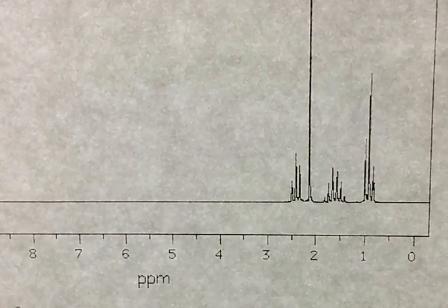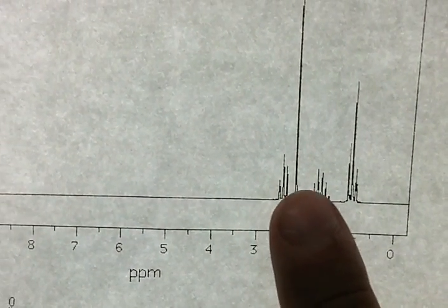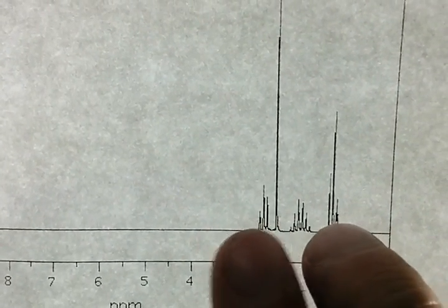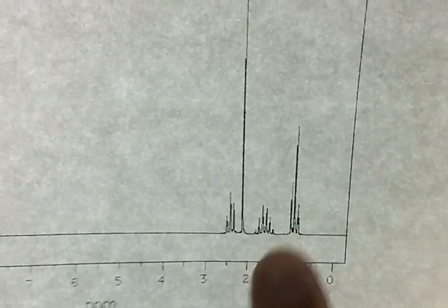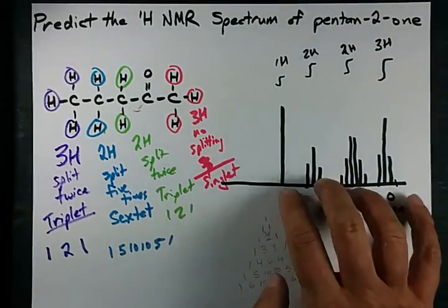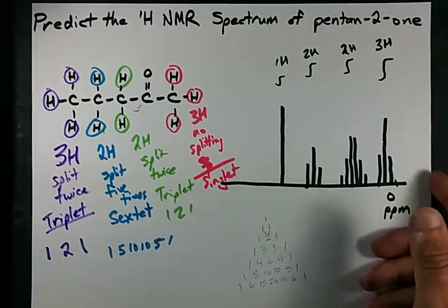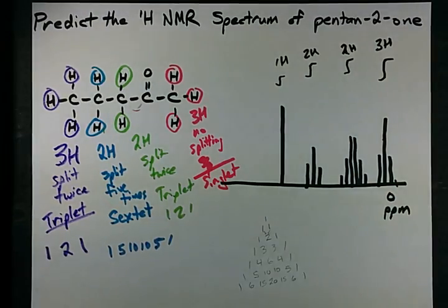Then we have a sextet. A 1-5-10-10-5-1 pattern here. They're all really short because you've split it so many times into several small peaks. See how small the peaks are relative to my fingers? And then we have another triplet. Close to zero PPM. Yeah, not too bad. All right, if you understand why I got these peaks, and the approximate order of them, and why they're split in this way, you're fine. That's how NMR goes. Best of luck.